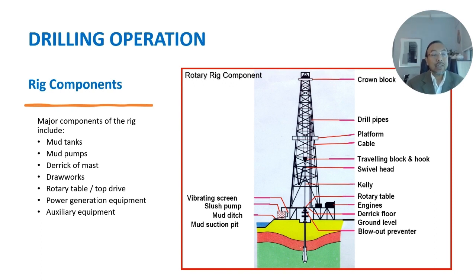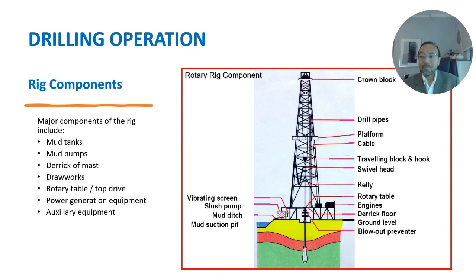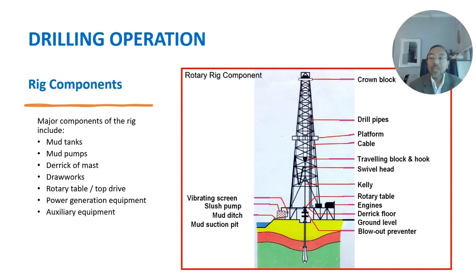Now we move to rig components. Major components of the rig include a mud tank, which is an open-top container typically made of square steel tube and steel plate to store drilling fluid on a drilling rig. A mud pump is a reciprocating piston-plunger pump designed to circulate drilling fluid under high pressure — up to 7,500 psi — down the drill string and back up the annulus.